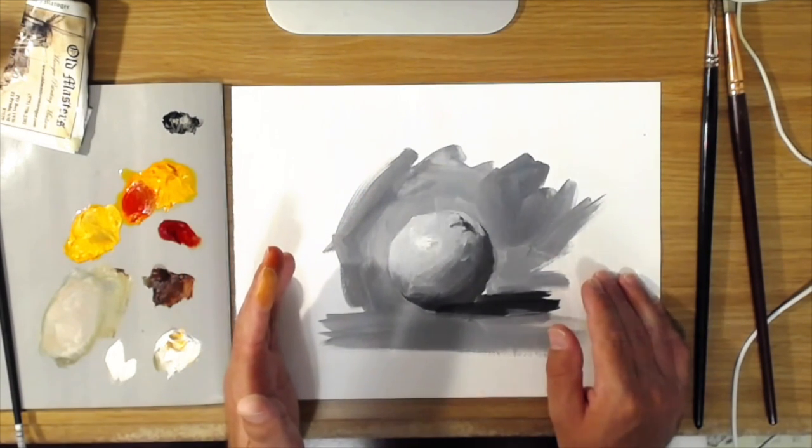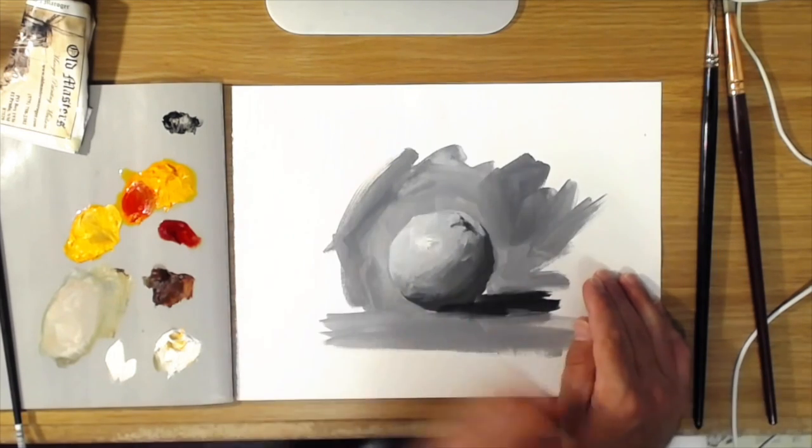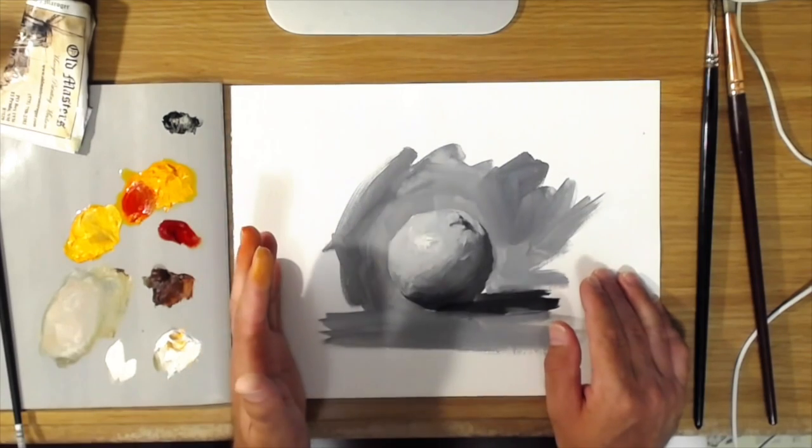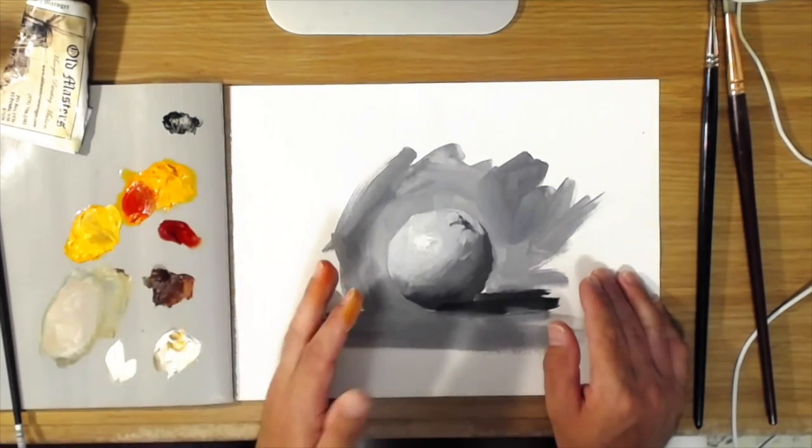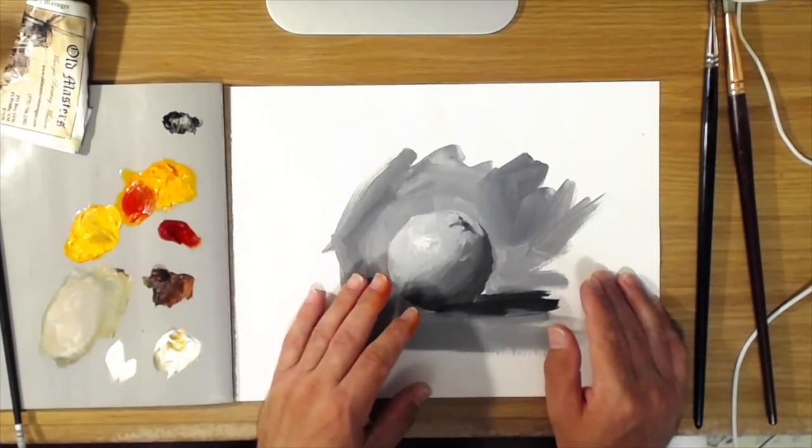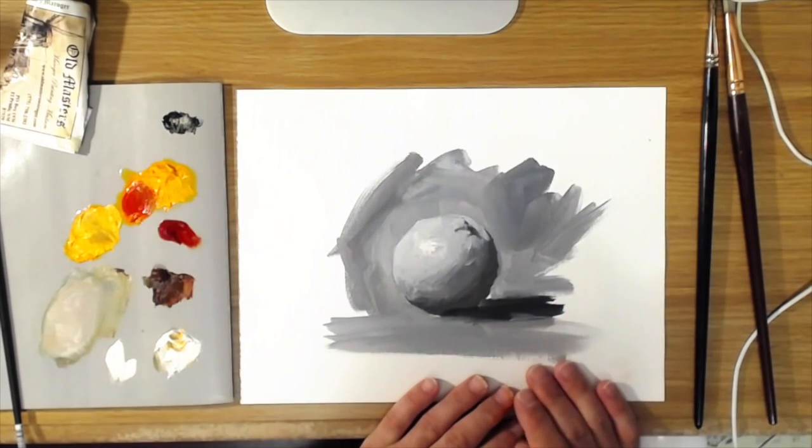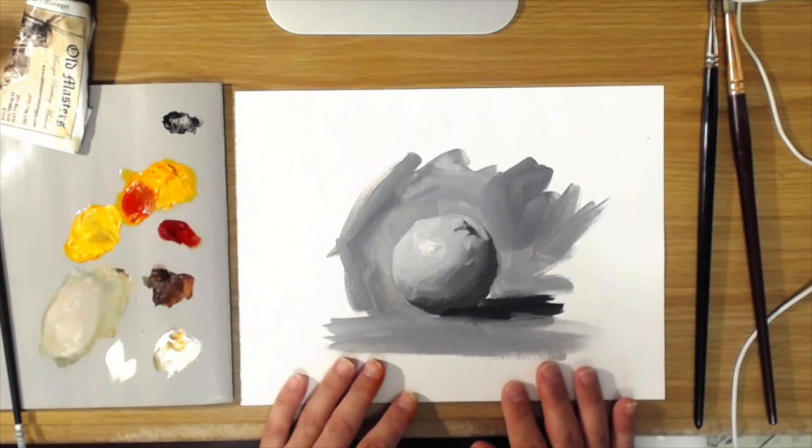The reason it took so long to make a painting was you had to put this down and let it dry, and then you put the next layer down and you let it dry, and then the next layer down. So it would take months or even years sometimes to complete a painting. So I will show you that technique here.